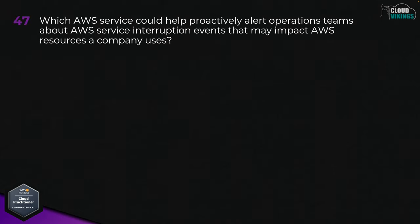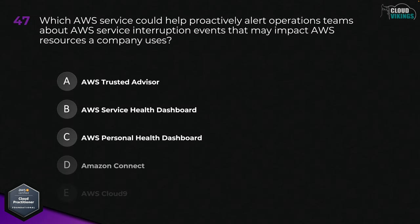Question forty-seven: which AWS service could help proactively alert operations teams about AWS service interruption events that may impact AWS resources a company uses? Options are: A, AWS Trusted Advisor; B, AWS Service Health Dashboard; C, AWS Personal Health Dashboard; D, Amazon Connect; or E, AWS Cloud9. The best answer here would be C, AWS Personal Health Dashboard.